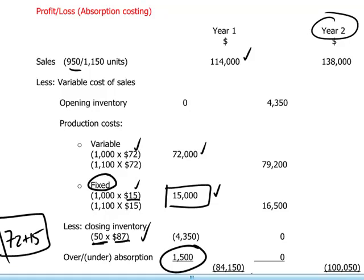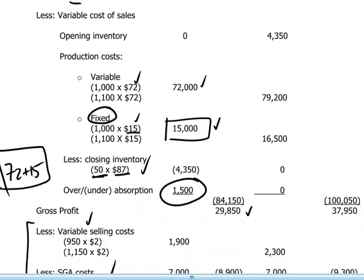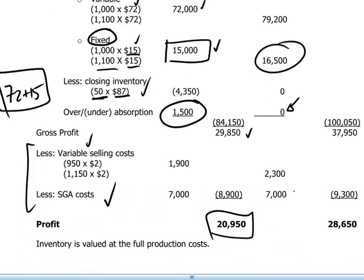The candidate is invited to work through the year two numbers following the same approach. Note that in year two, 1,100 units absorb $15 per unit of fixed overhead, totalling $16,500, so no adjustment is required and the final profit will be $28,650.